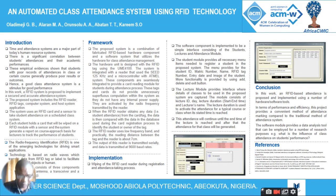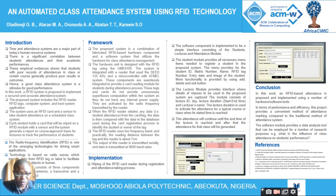When the RFID reader obtains data from the tag, the data is compared with the data in the database used during the card registration process to identify the student or owner of the tag. This means the card is used twice — during registration and during class attendance. The output of the reader is transmitted as data to an interface software used for management and visualization of the class attendance system.